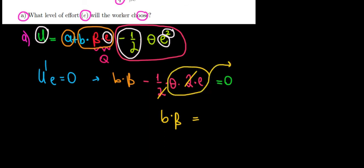We take it to the other side and we have theta times E. We divide both sides by theta, meaning the optimal effort level is B times beta divided by theta. Hope this makes sense. In the next video we go to part B.